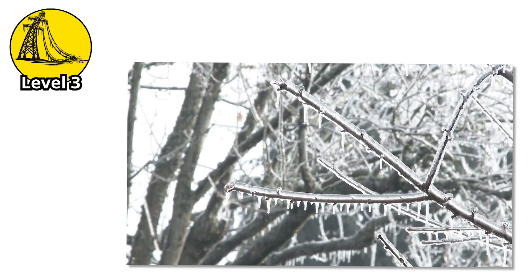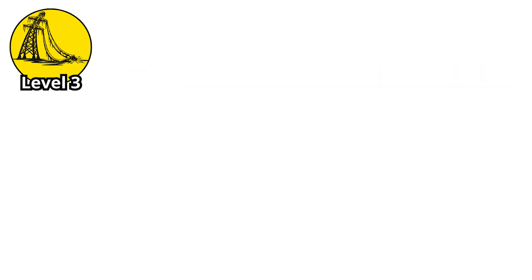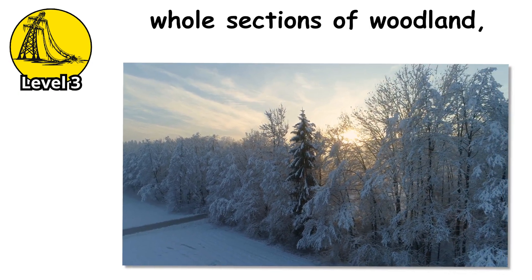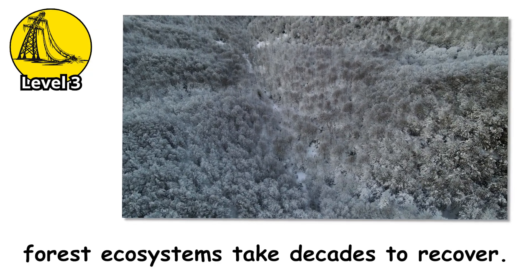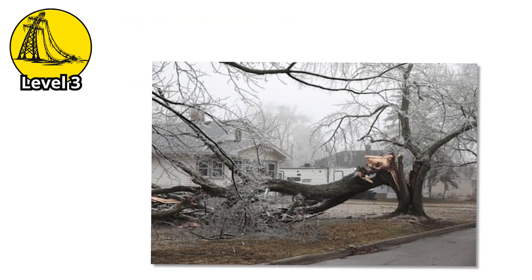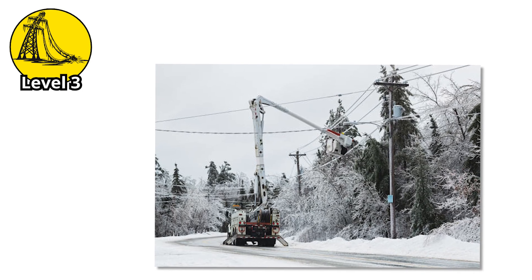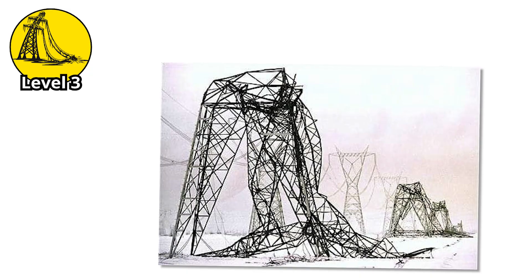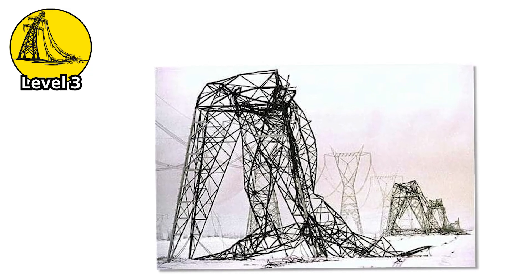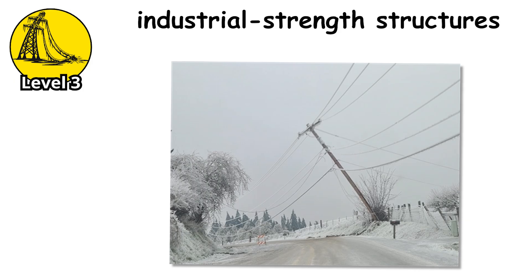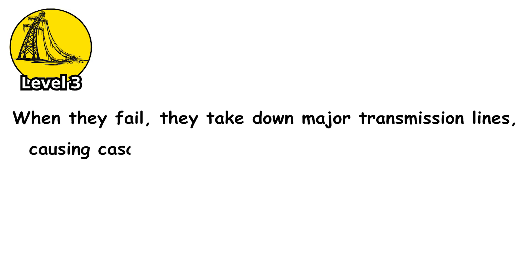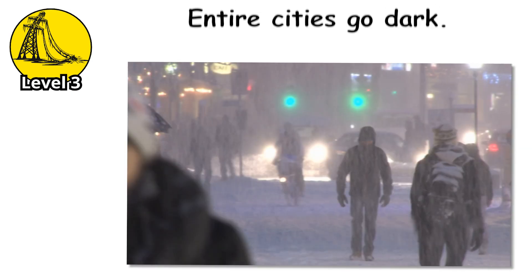Forests become graveyards. Entire stands of trees — acres upon acres — simply collapse. Not individual trees, but whole sections of woodland, creating scenes that look like giant invisible hands have reached down and crushed everything. The damage is so severe that forest ecosystems take decades to recover. Young trees get crushed by falling mature ones. Wildlife loses habitat overnight. The power grid doesn't just fail at this level — it disintegrates. Transmission towers, those massive steel structures that carry high-voltage lines across regions, begin buckling under the ice load. These aren't suburban utility poles — these are industrial-strength structures designed to withstand extreme conditions. When they fail, they take down major transmission lines, causing cascading blackouts that ripple across states.